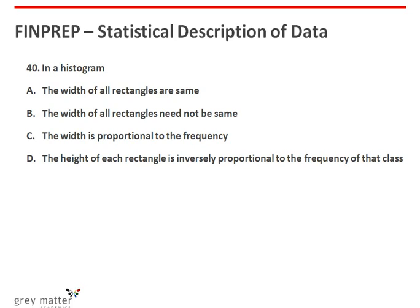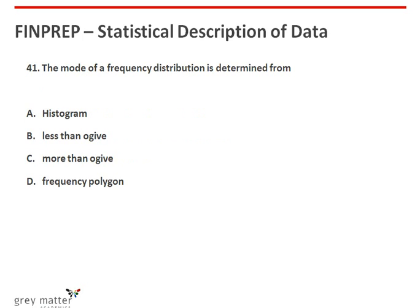Fortieth question: in a histogram, the width of all rectangles need not be the same. The answer is option B. Forty-first question: the mode of a frequency distribution is determined from a histogram. The answer is option A, which says histogram.